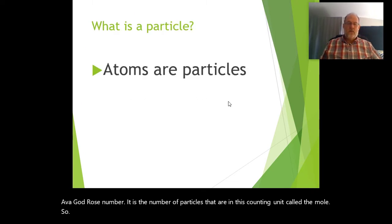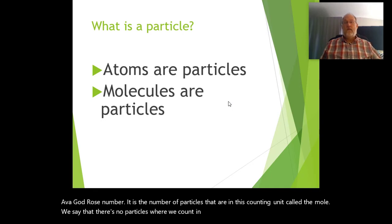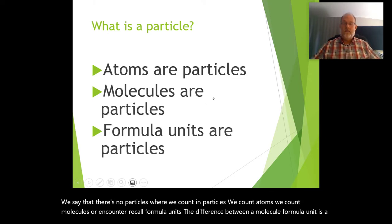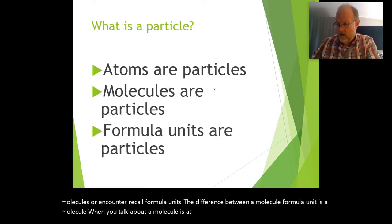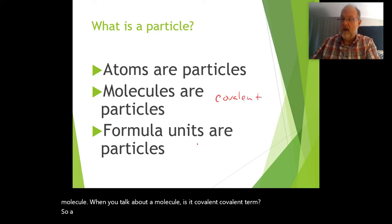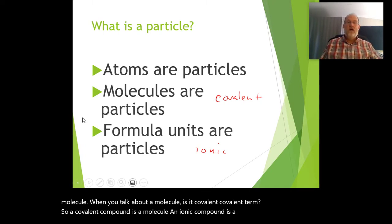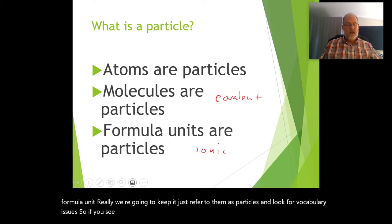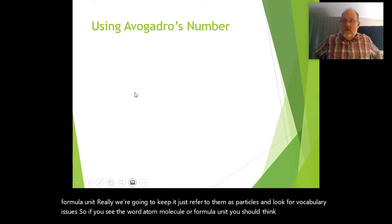We count in particles: atoms, molecules, or formula units. The difference is that a molecule is a covalent term — a covalent compound is a molecule — whereas an ionic compound should be referred to as a formula unit. We're going to refer to them all generally as particles. So if you see the word atom, molecule, or formula unit, think particle.